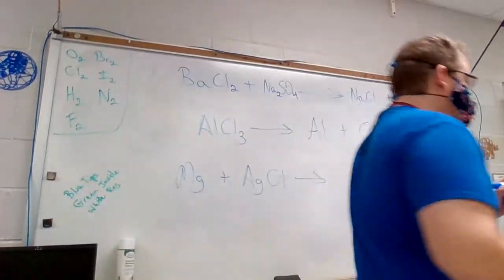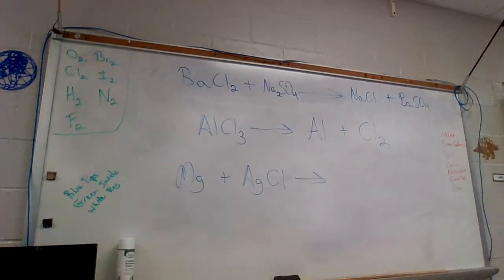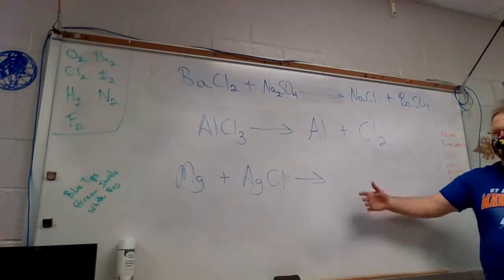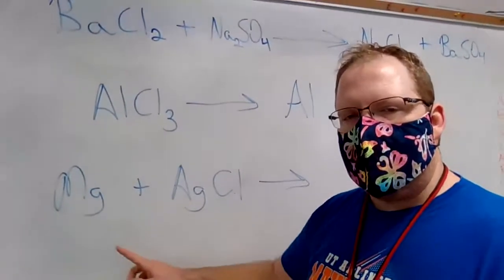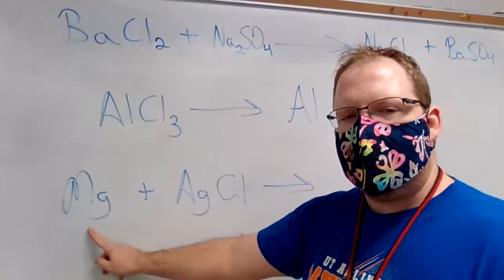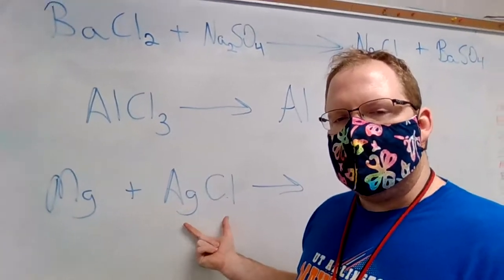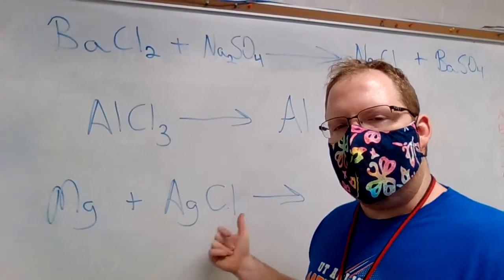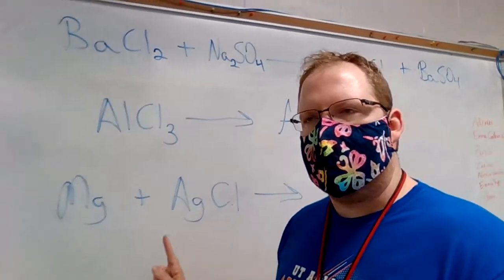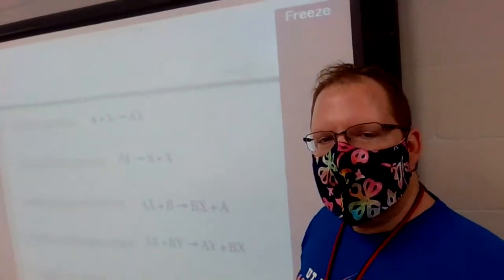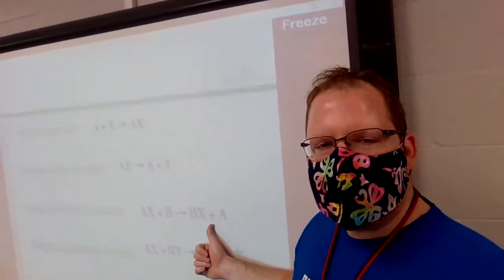Now let's look at number 12. It's pretty much the same thing — they want you to predict the products for the skeleton equation and tell them what kind of equation it is. But we have to look at this one a little differently. I have a single element plus a double-element chemical all before the arrow. A single element plus a compound before the arrow is a single replacement reaction.